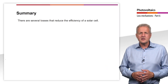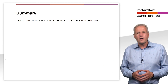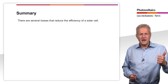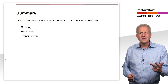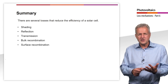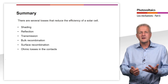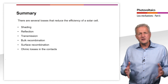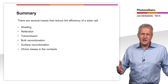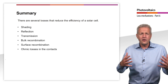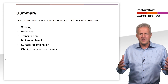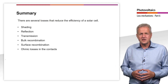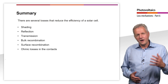In this teaching unit we have seen that there are a number of losses in a solar cell that reduce efficiency. The most important losses include shading, reflection, transmission, recombination in the semiconductor, recombination at the surface, and ohmic losses in the emitter and contacts. In the next chapters we will discuss different types of solar cells. Since crystalline silicon solar cells have a market share of over 90%, we will look at them first. The fourth chapter will then deal with other photovoltaic technologies such as thin-film technologies. Thank you for your attention.